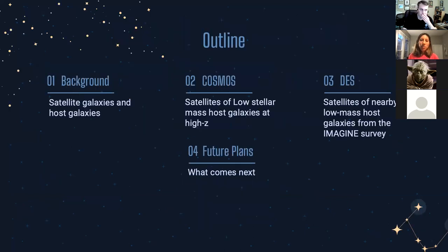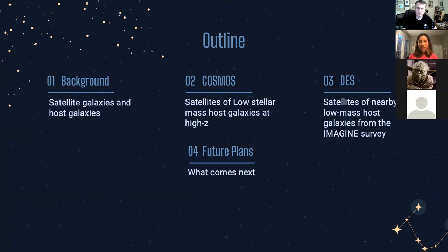Alright. The outline of this talk is going to go as follows. First, I'm going to give a brief background on what satellite galaxies and host galaxies are and why they're important to us. Then I will talk about my first work in COSMOS, where I look for satellites of low stellar mass host galaxies at high redshift. Then I will shift to my current work with the DES survey, looking for satellites of nearby low mass hosts for host galaxies in the IMAGINE survey. And then I'll let you know what I'm going to do next.